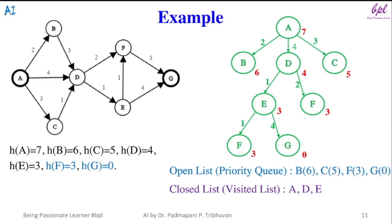F is already in open list so only G will be added to open list along with its heuristic. G has less heuristic so it will be selected. It is a goal state so the algorithm will terminate here.